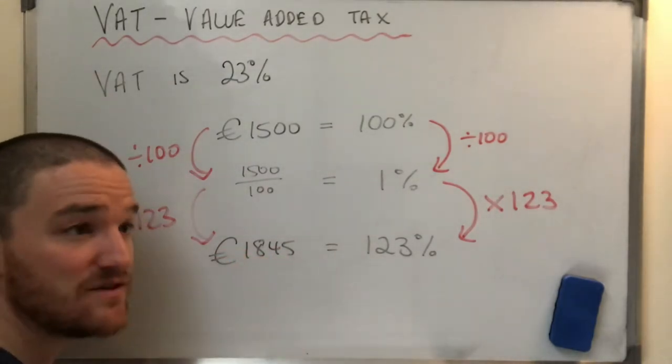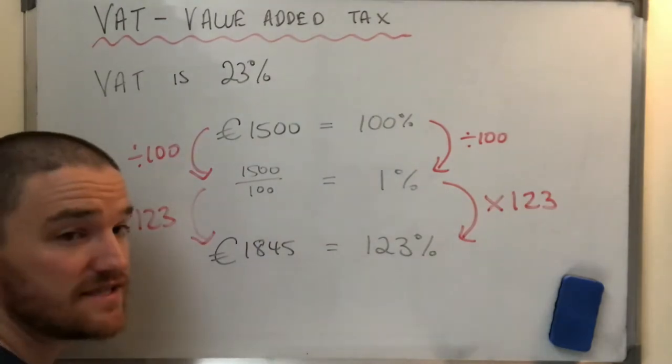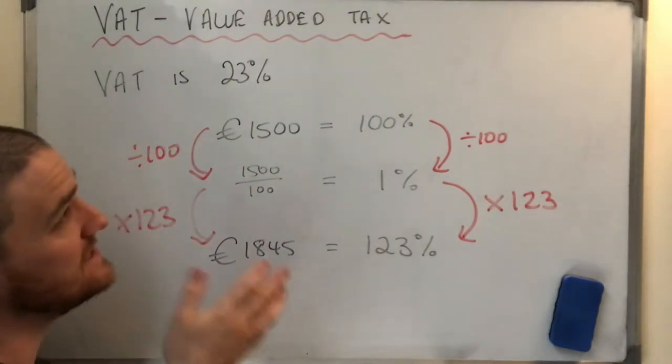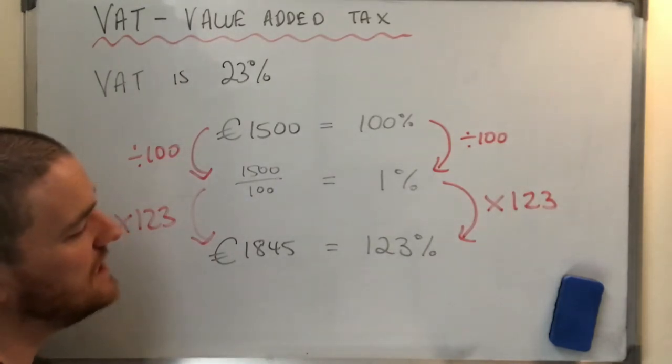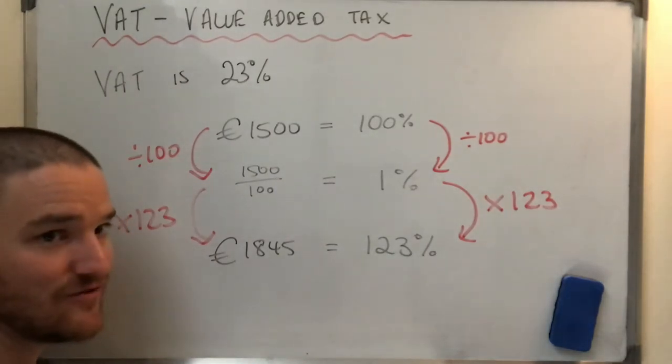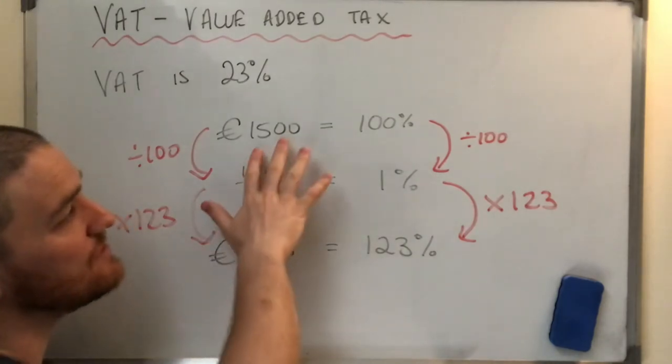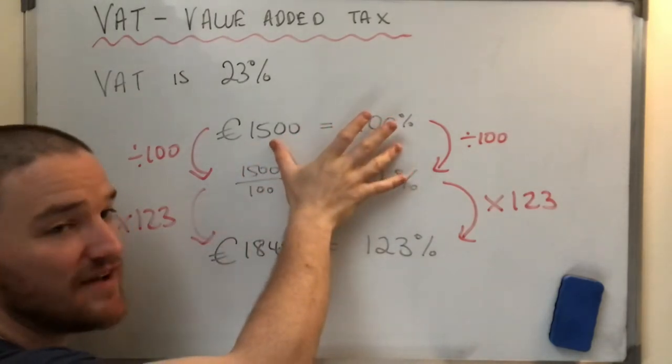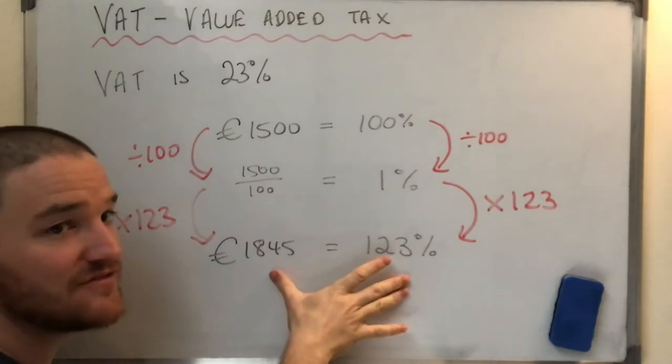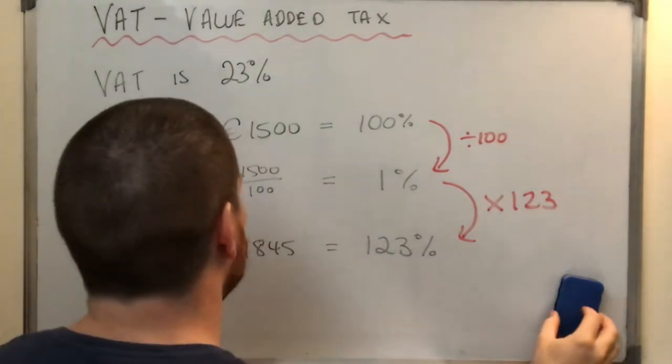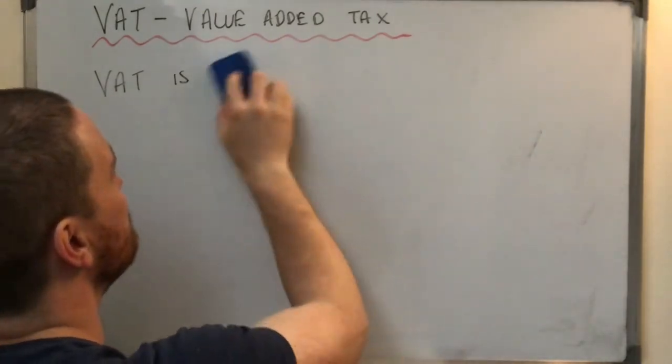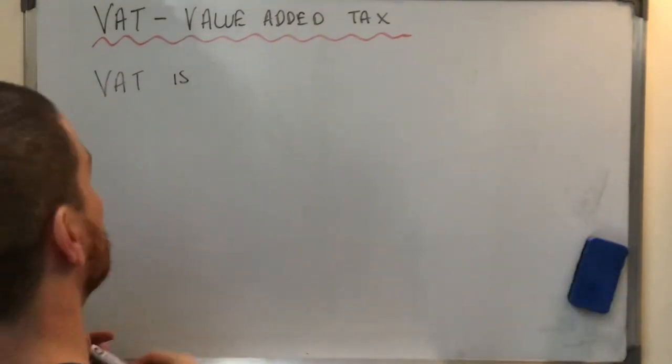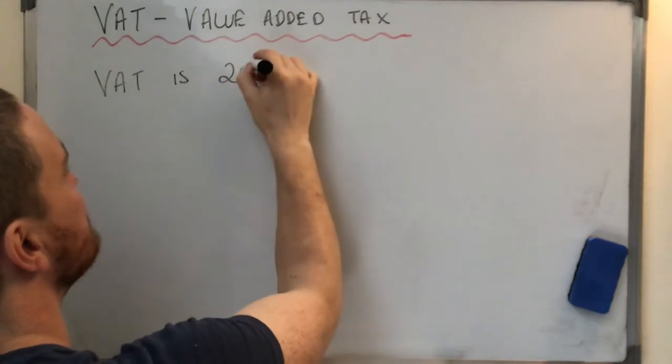So in this case, the band are getting €1,500. And the idea is that the government are getting, like the difference, €345. That's the tax that the band would pay for their services to the government. So this taxes helps runs the country and do things like that. Okay, cool. Right. Let's go for now a reverse scenario. So this is where we were given the number before VAT and we were told to find the price after.